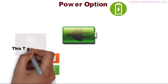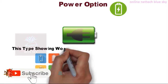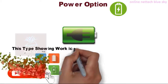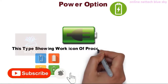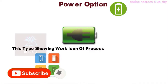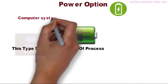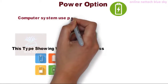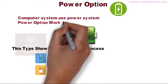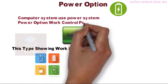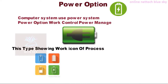This is very important to understand power related information for data controlling systems. A lot of features are available. The working icon is one type of process in the computer system — using the power system. Power options control and manage the power.